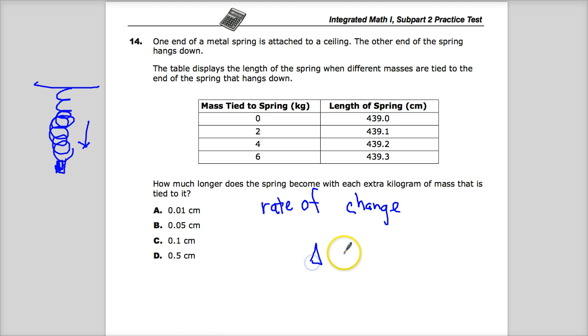I'm looking for the change in the dependent variable versus the change in the independent variable. This is not supposed to be a triangle. It's supposed to be the Greek letter delta, which would represent change. Or you could just say Y change over X change. So really, we're doing kind of a slope question.